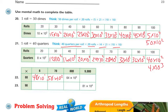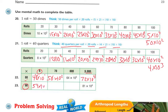9,000 times 80: 9 times 8 is 72, and I have 1, 2, 3, 4 zeros, so it's going to be times the fourth power of 10. Now I'm on this one: 90 times 6. 9 times 6 is 54. Times I have 1 zero, so it's going to be the first power of 10.